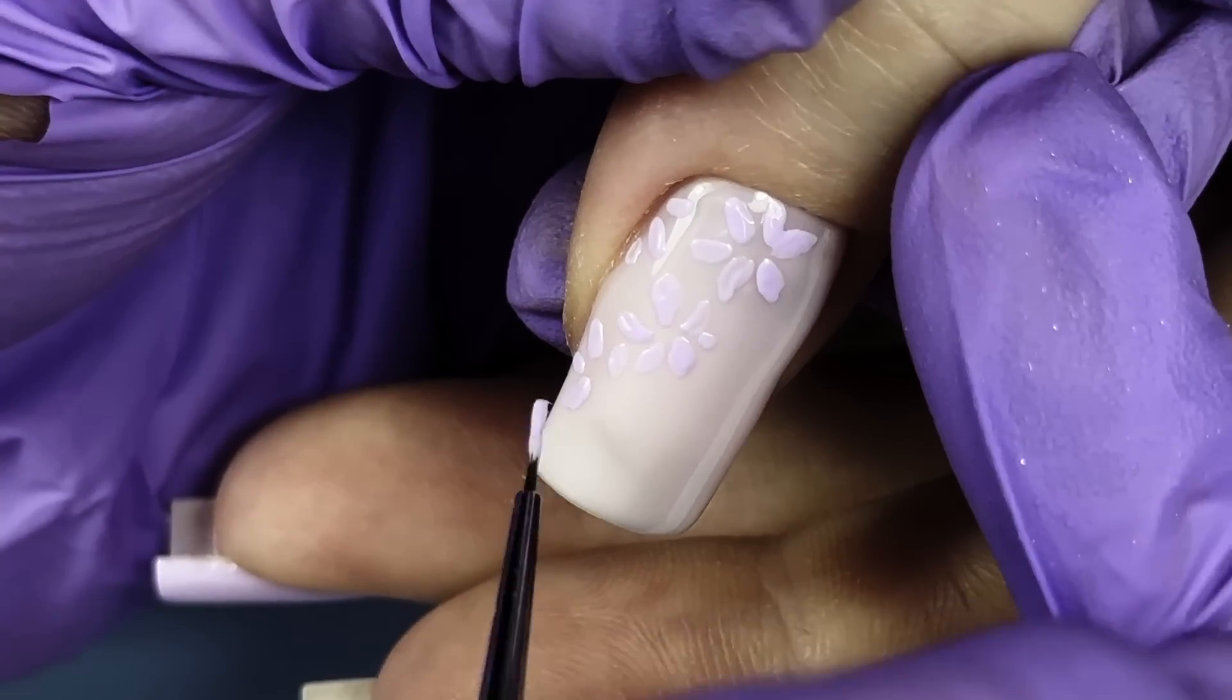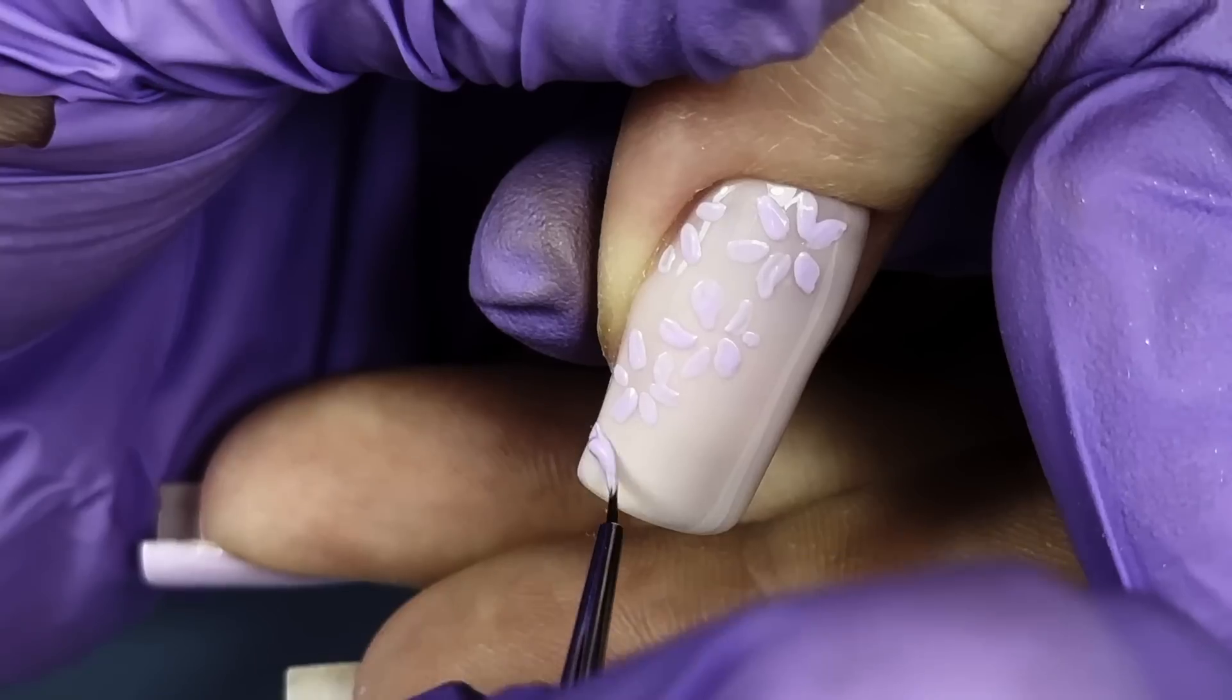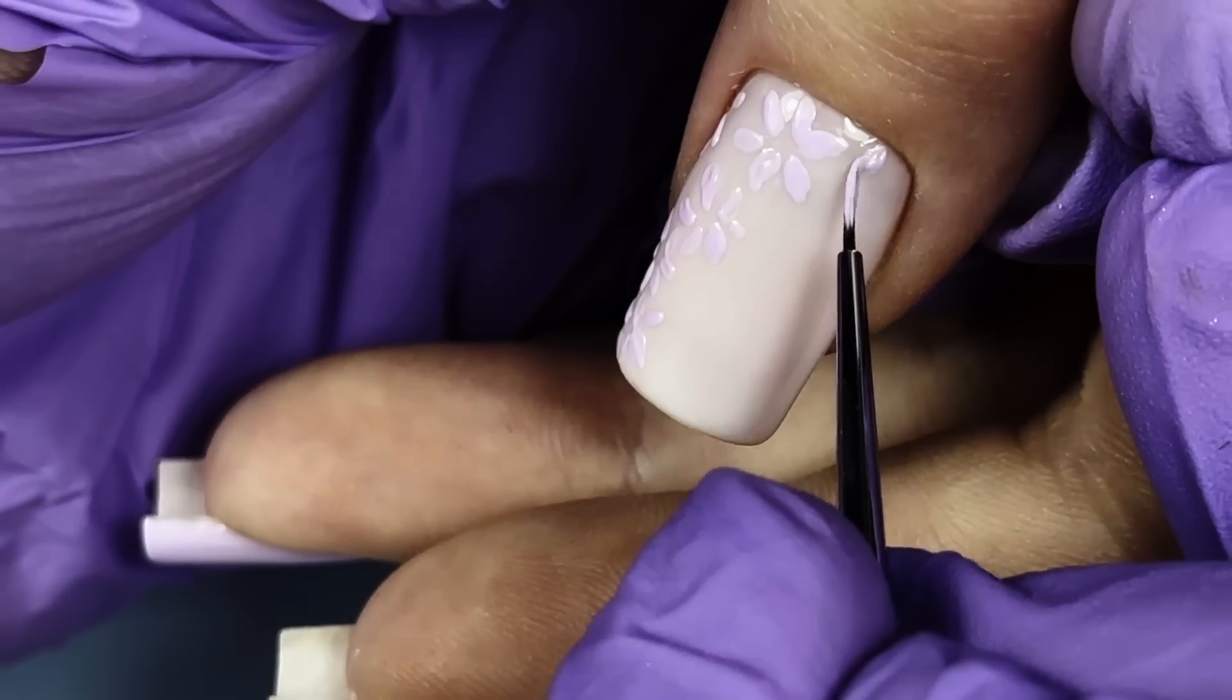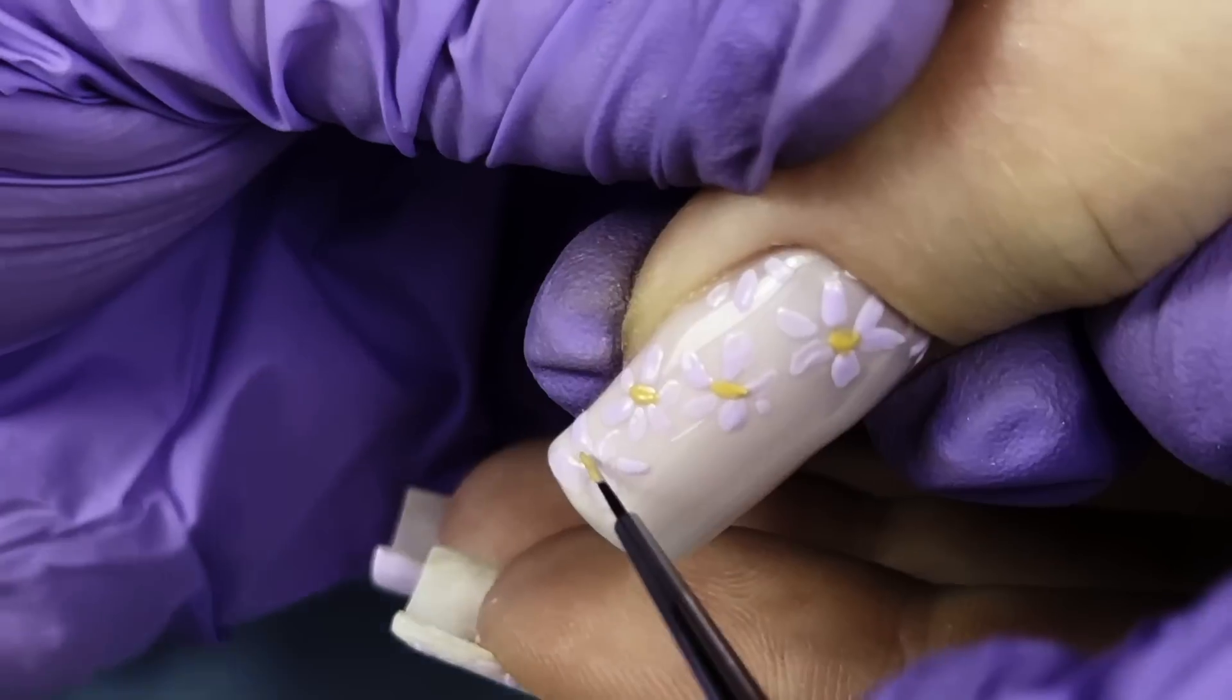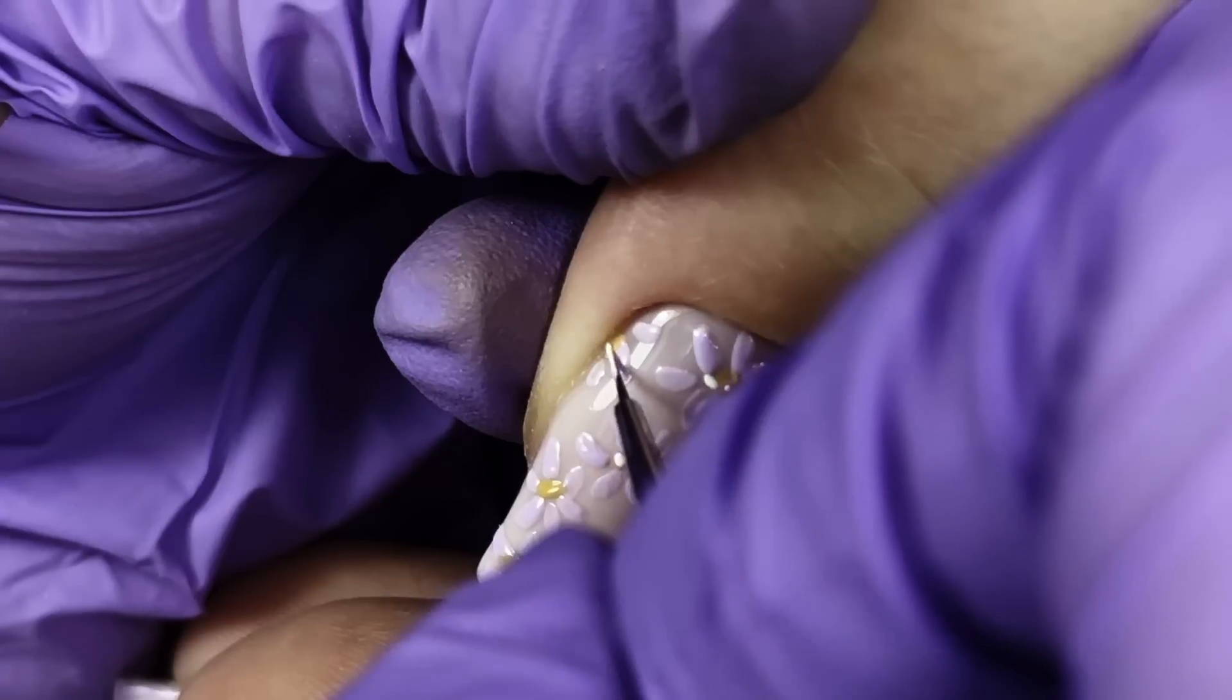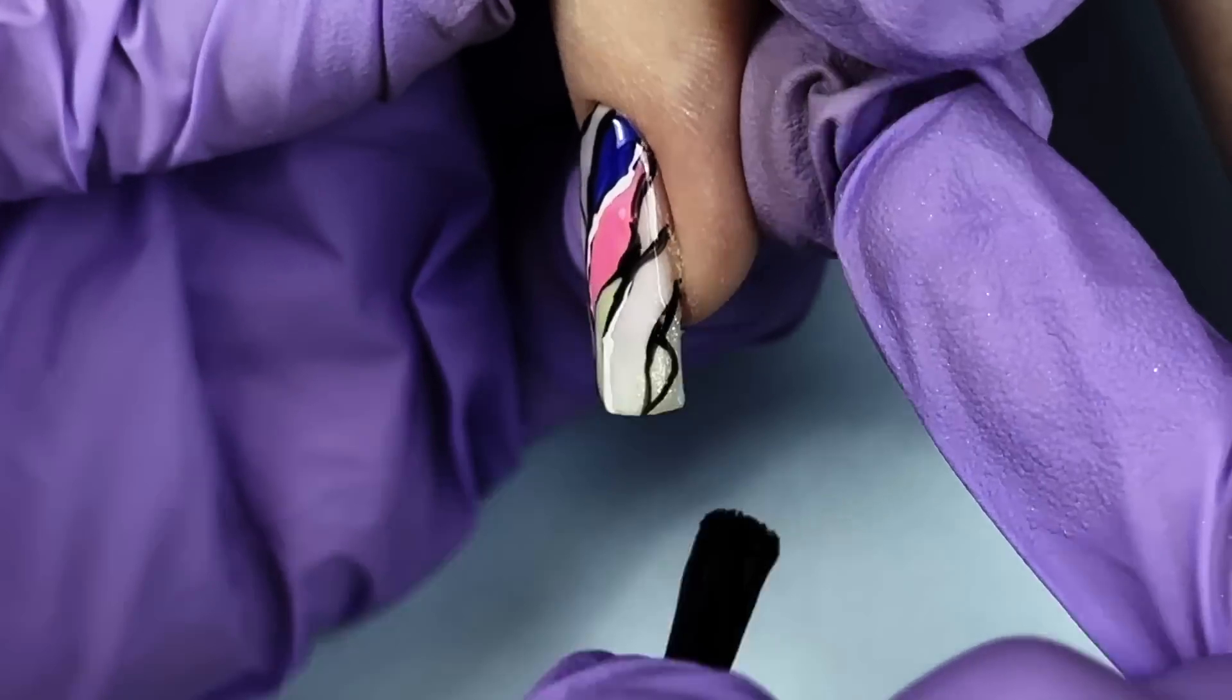All you need to do is just pick the color that you like and create some petals - you can do five or six of them, it doesn't really matter. At first this design looks a little messy, but once you add something in the center - I decided to use a yellow color - now they definitely look like flowers. Then I added some white accents to the center to add a little bit more volume.